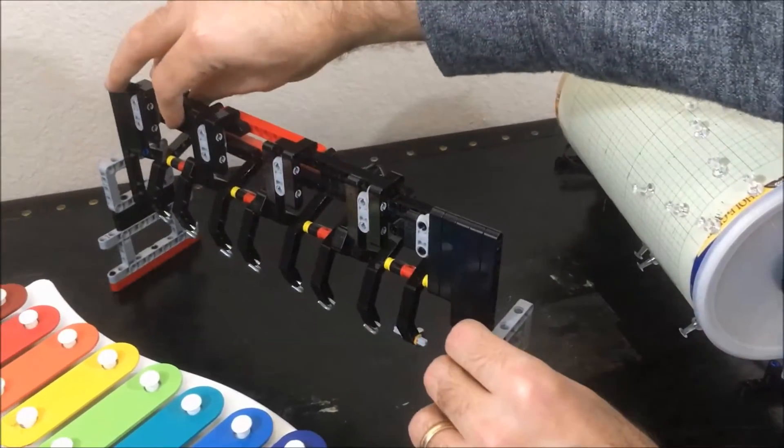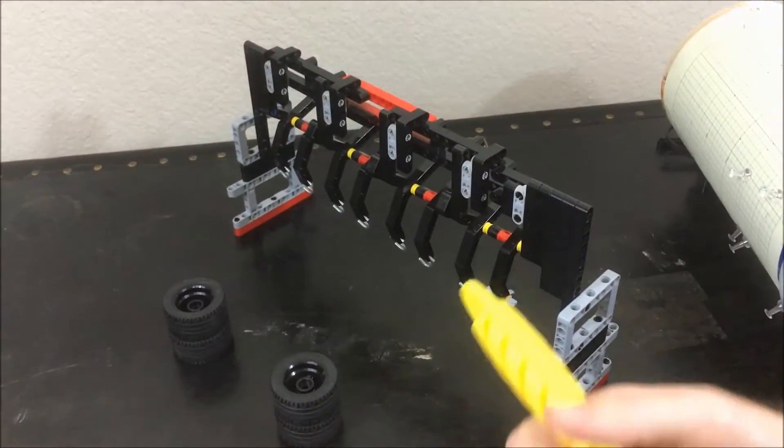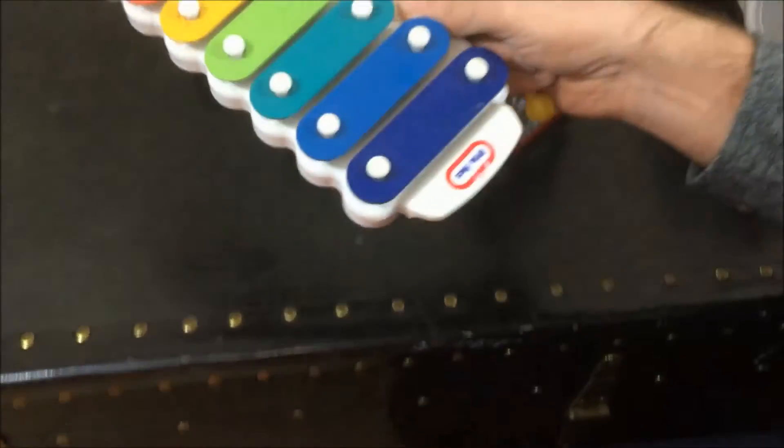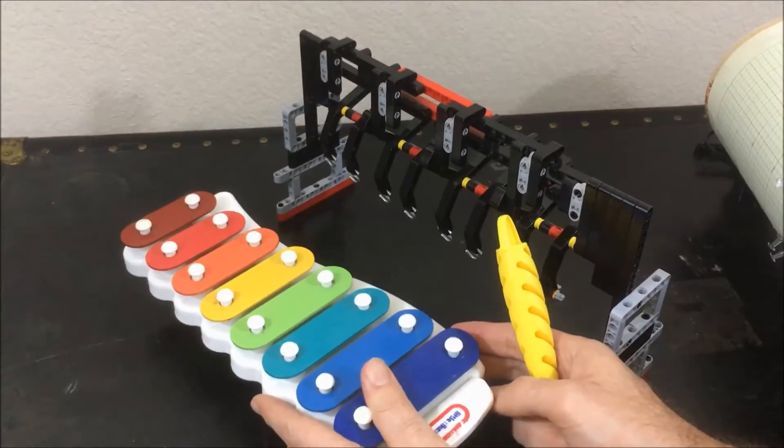Now the xylophone itself is a very popular basic kids xylophone that you can find at any toy store and we just disassembled it in order to give us better control over the height and position of the xylophone in respect to the rest of the robot.